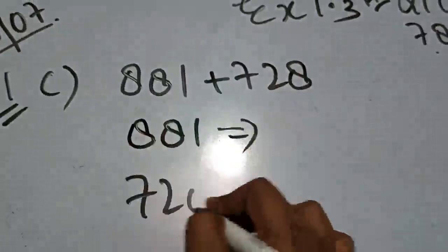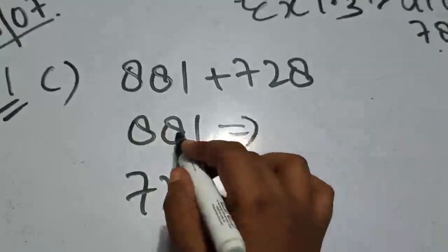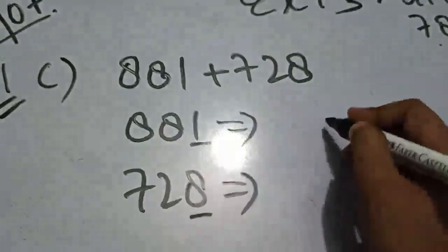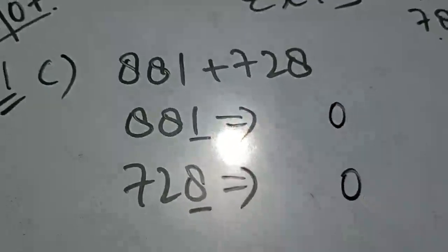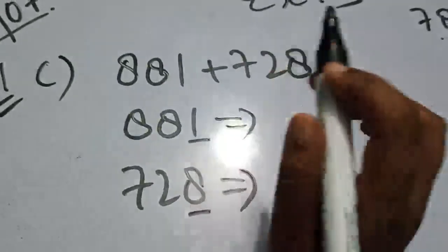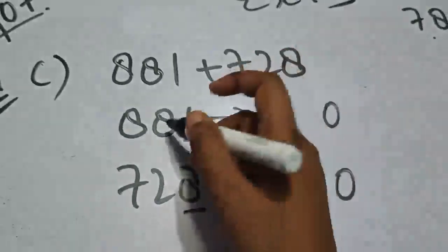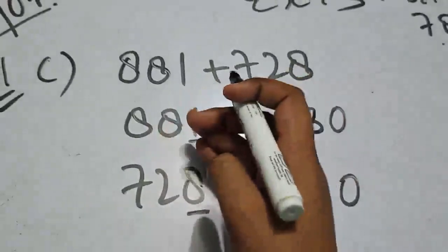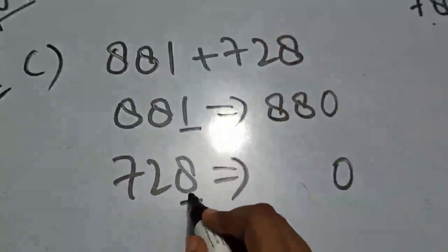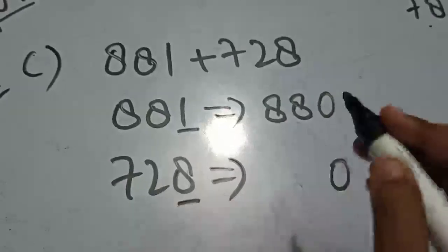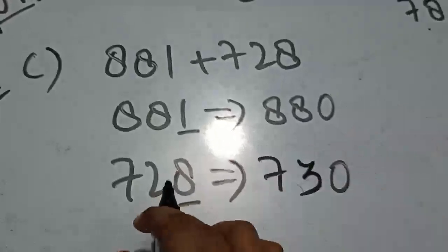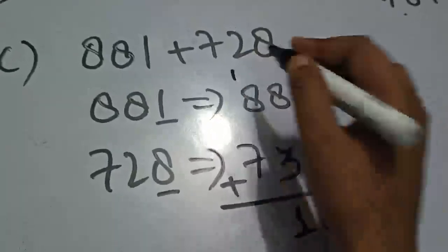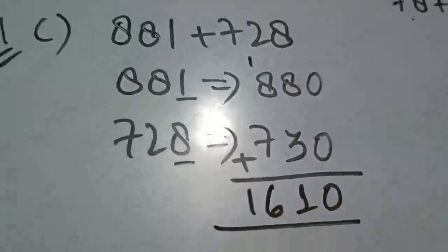C part کرتے ہیں: 881 اور 720 لکھ لیا۔ Nearest tens والا ہی ہے۔ Ones کی جگہ zero لگا دیا۔ اس سے پہلے کوئی values نہیں ہیں تو وہاں zero نہیں آئے گا۔ Underline والی value چیک کریں: کیا 5 ہے یا 5 سے بڑی ہے؟ نہیں — تو 8 as it is۔ 720 میں: کیا یہ 5 سے بڑی ہے؟ ہاں — تو 2 plus 1 = 3، اور 7 as it is رہا۔ اب 881 plus 720 کا nearest tens میں: 8 plus 3 = 11، 1 carry، 8 plus 1 = 9، 9 plus 1 = 16۔ بہت easy ہے۔